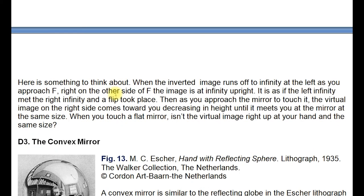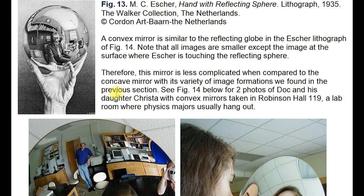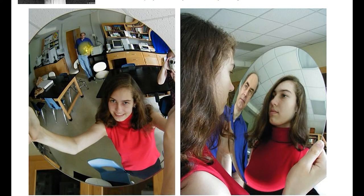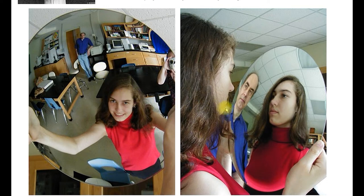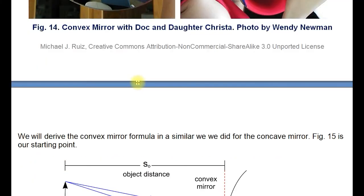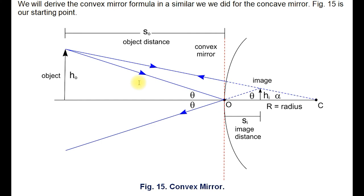The convex mirror is like the Escher reflecting globe — 'Reflecting Hand with Reflecting Sphere.' Here are some photos including one with my daughter and Wendy Newman, a professional photographer from Asheville who helped set up the compositions. Images in a convex mirror are smaller — just like in the Escher — and if you touch the mirror, the image is the same size; as you back away, it gets smaller. Now we're going to look at this diagram and go to the drawing board to work out the formula for the convex case.